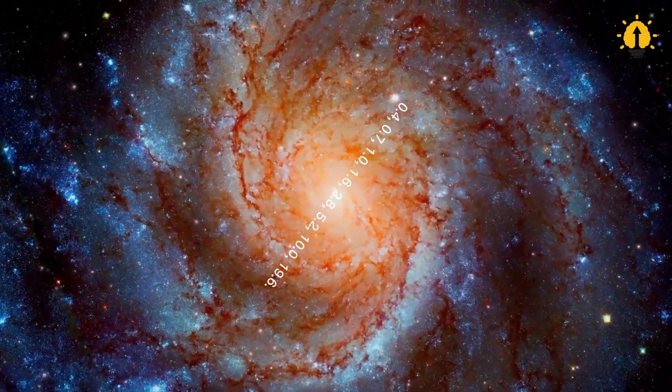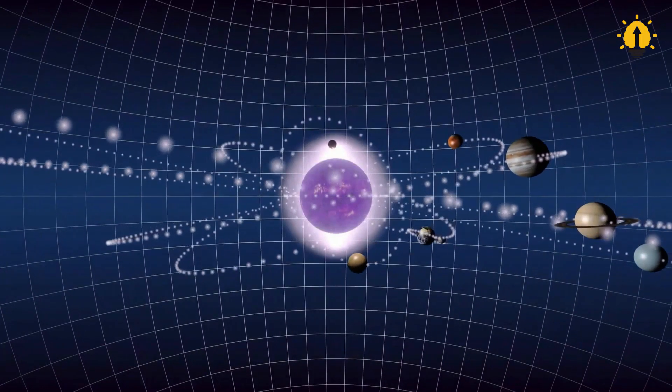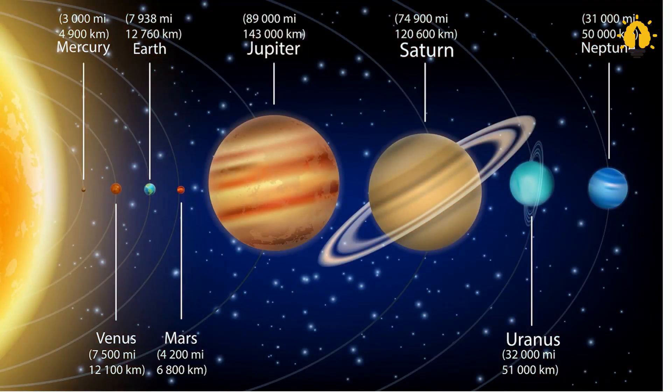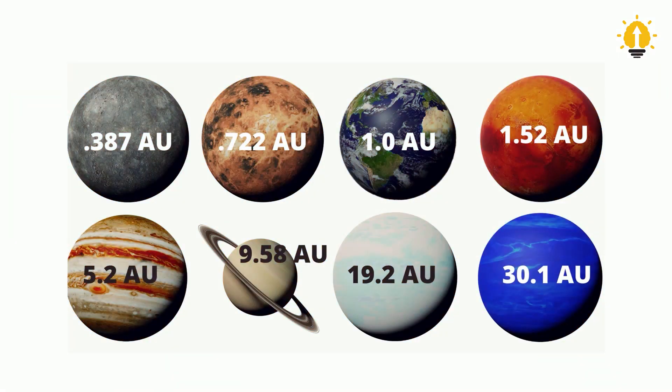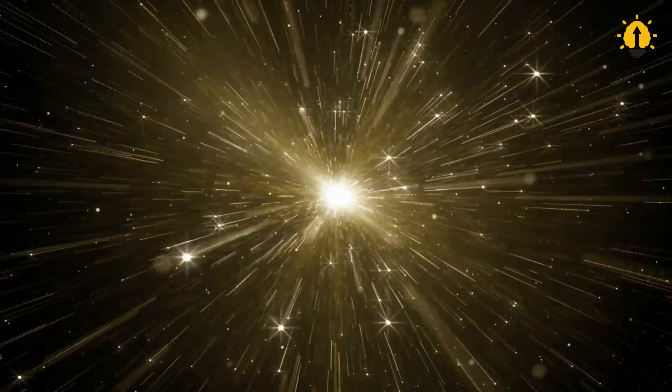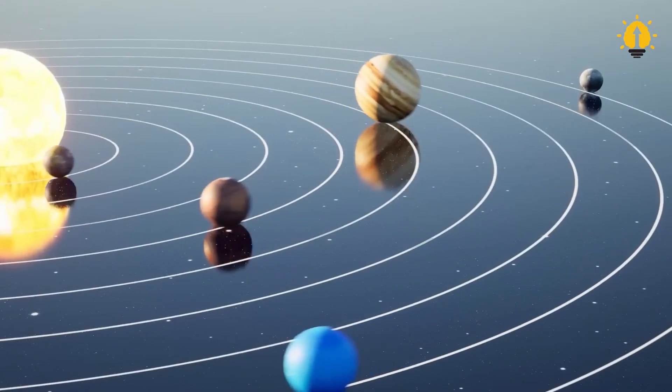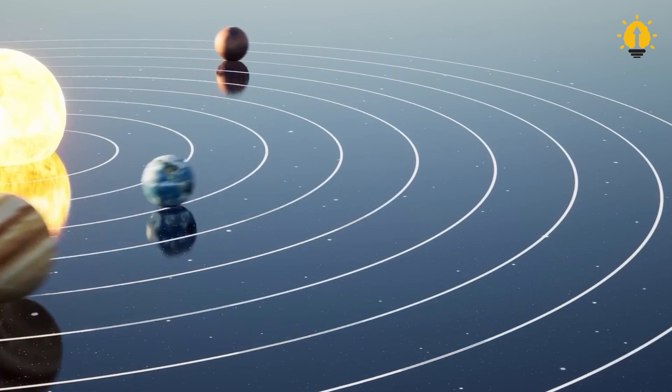These numbers correspond to the astronomical units between individual planets and the sun. The astronomical unit, abbreviated as AU, is defined as the distance from the Earth to the sun, which is about 150 million kilometers.